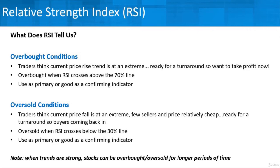Also note that when trends are strong, securities can be overbought or oversold for longer periods of time. That makes sense — when there's a long, well-established strong trend, people are a little less reluctant to get off that trend train because it already looks very good. By using RSI, we can recognize that the train might be coming to an end. If we own it in an overbought condition, and another indicator says a turnaround might be coming, and RSI also says a turnaround is coming, it might be a great time to get out. That 70% and 30% line are the key parts to watch.